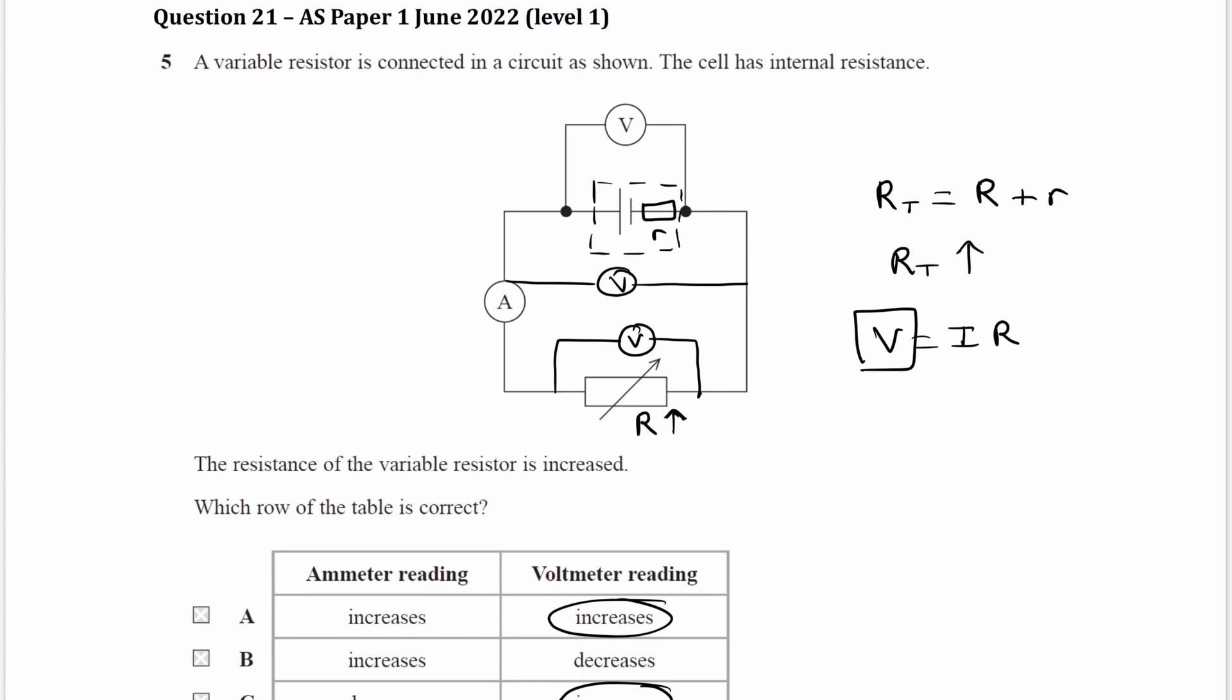If our voltage, which is effectively our EMF in this case, if that remains constant, and our resistance goes up, then that means our current will go down.